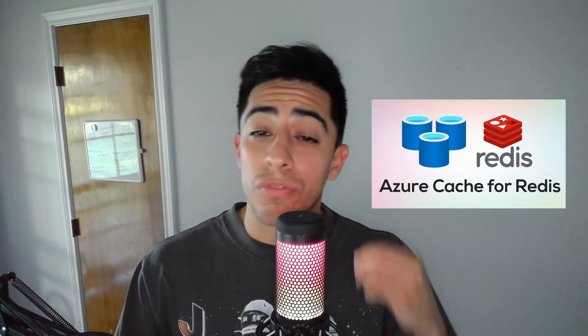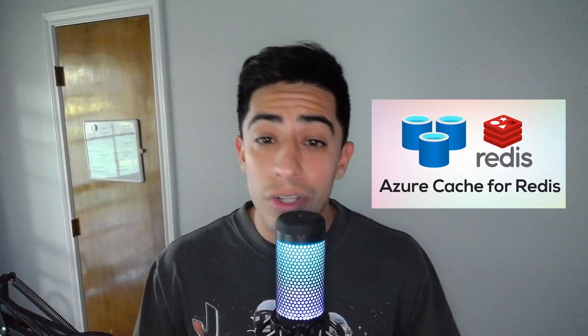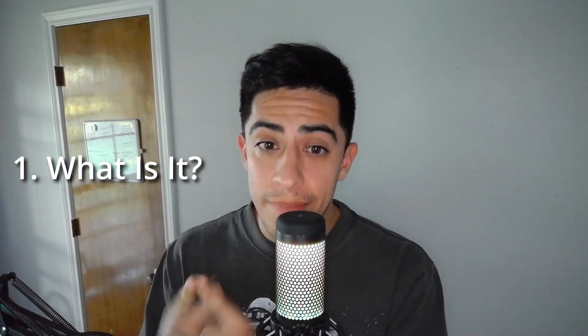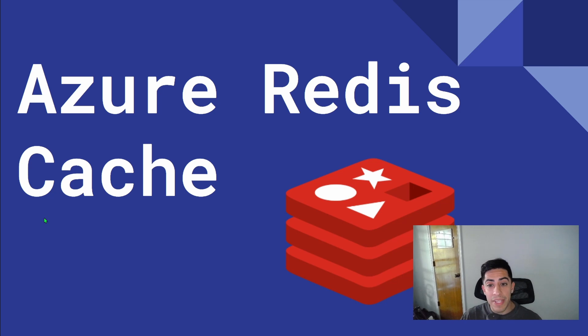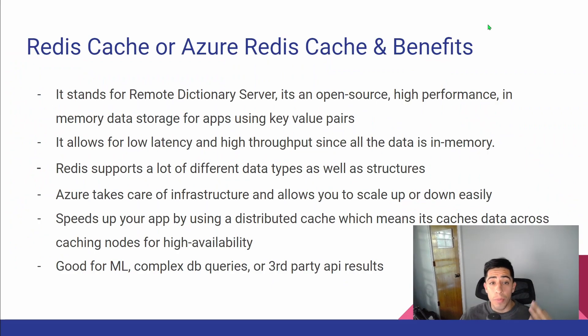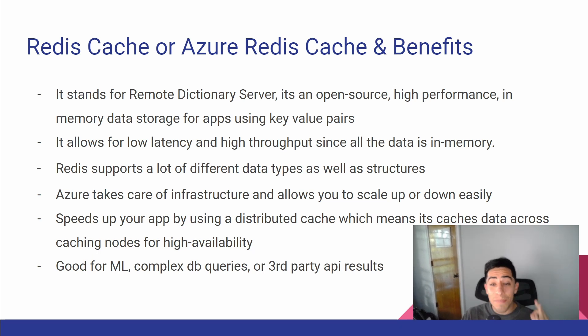It's basically a cache or temporary storage in Microsoft Azure that can store a lot of the most frequently accessed or requested data, alleviating the pressure from your database. So let's go over what Azure Redis Cache is, its benefits, and how to add it to your .NET API project. Redis stands for Remote Dictionary Server. It is an open source, high performance, in-memory data storage for apps using key-value pairs.